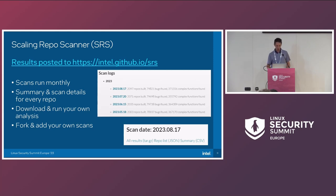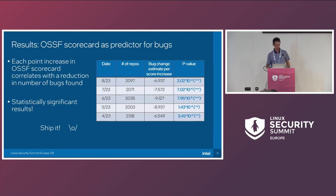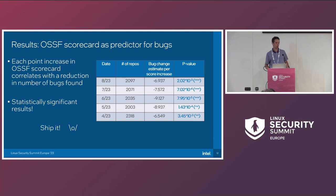You can grab all the datasets online — we provide a summary of how many repositories we built, how many bugs we found, and how many complex functions there are. Let's look at what we set out to study. Does OSSF Scorecard work as a predictor for bugs? We actually find that for each increase in the OSSF Scorecard score, we see a reduction in bugs. For each point increase in the OSSF score, there's a reduction of seven, eight, or nine bugs.